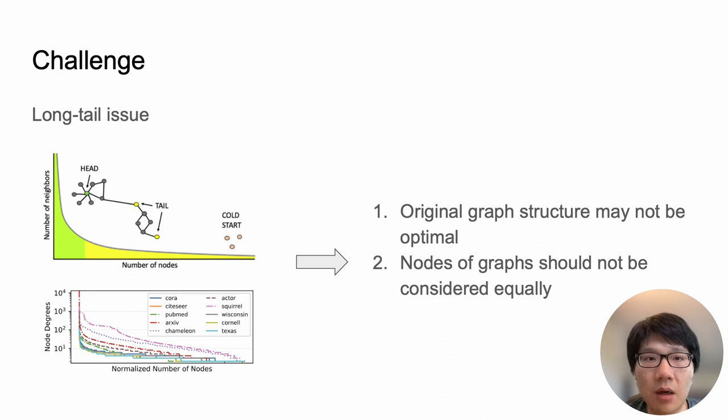Additionally, there is a long-tail issue existing in many real-world graphs, where only a few head nodes have rich connection information, while the majority of nodes only have few or no neighbors. In this case, the original graph structure may not be optimal, and the nodes of graphs should not be considered equally.